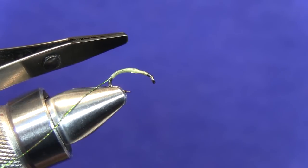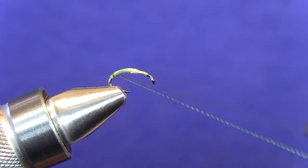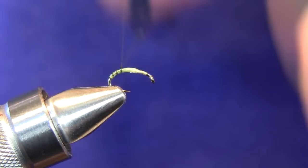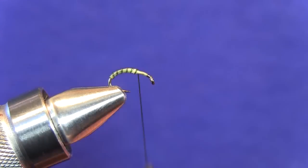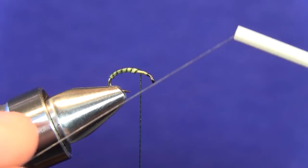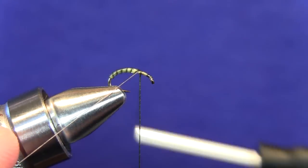Now at this point, just take your hackle pliers, grab the end of that sulky metallic thread material and just make nice even wraps up through that abdomen, which is the watery olive thread. We're just going to go just beyond that halfway point, and now we're ready to tie that off with our black 8/0 thread.